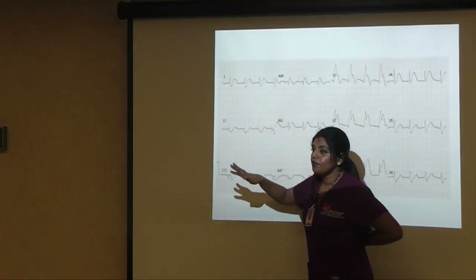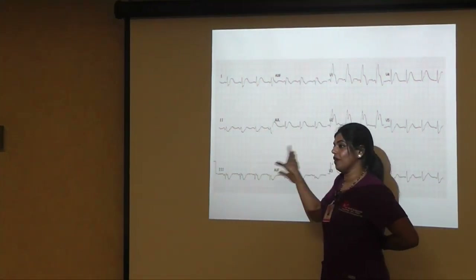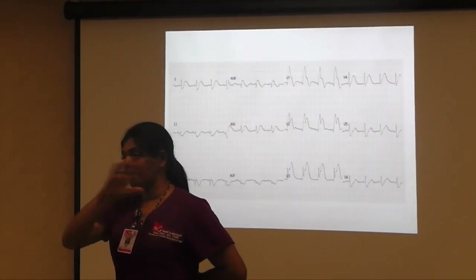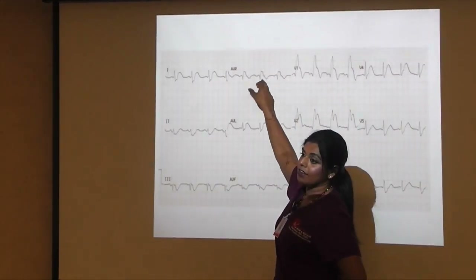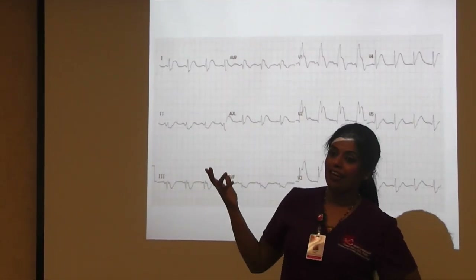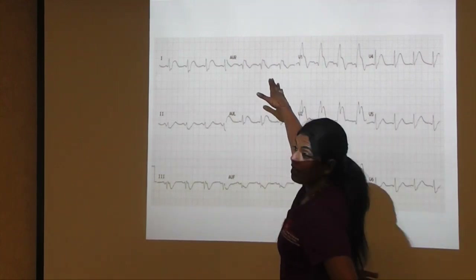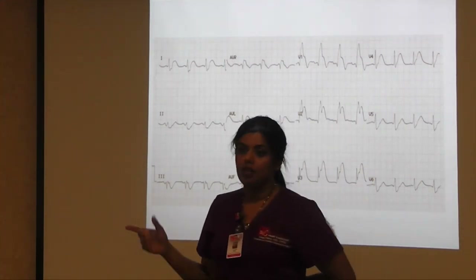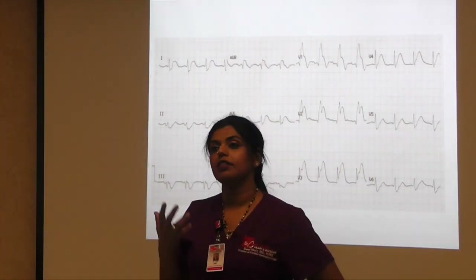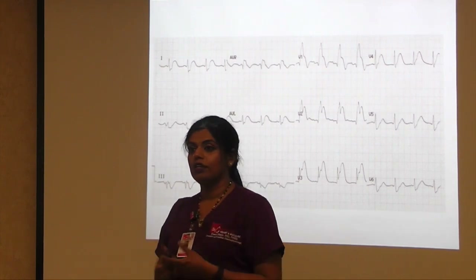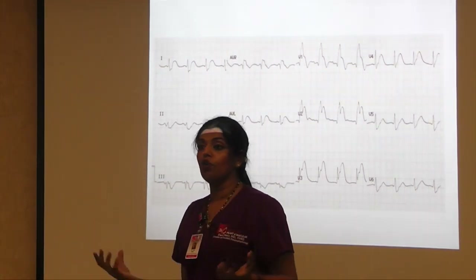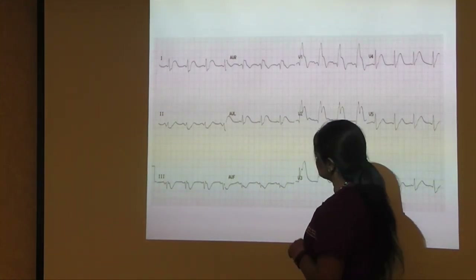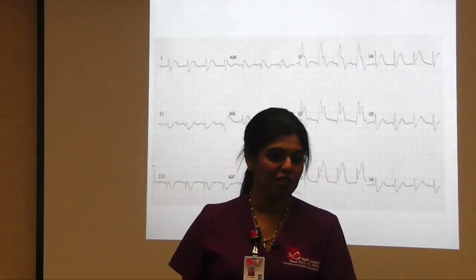AVR is a lead by itself that looks at every lead together. The only time you worry about AVR is when the entire EKG is normal and AVR alone has ST elevation — then you have to worry about left main occlusion, a very global ischemia. If there are ST elevations elsewhere, AVR elevation is expected and you should not call left main based on that.